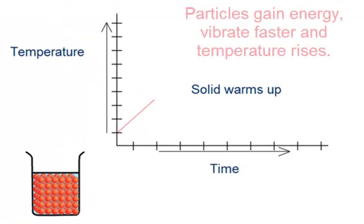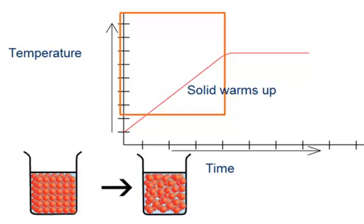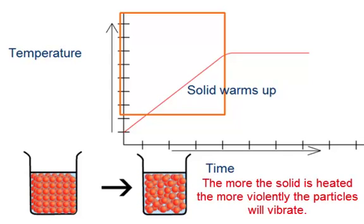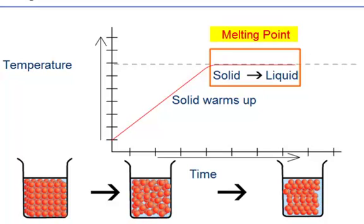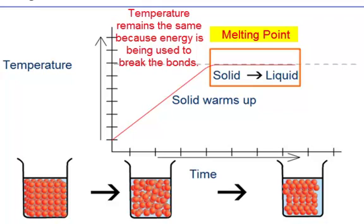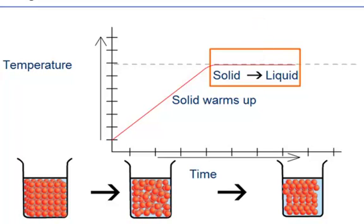When a solid is heated, the particles gain energy and vibrate faster, and the temperature will start to rise. The more the solid is heated, the more violently the particles vibrate, and the temperature will continue to rise. At the melting point, the temperature remains the same. This is because the energy being supplied is being used to overcome the forces holding those particles together — freeing them from their solid structure — and not increasing the temperature. Notice that plateau: the energy being inputted is being used to break bonds instead of increasing the temperature. So as time goes by, energy is still being inputted, but the temperature will not rise.